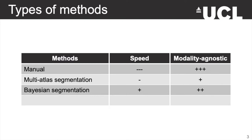The modern segmentation literature now focuses on supervised convolutional neural networks, which are extremely fast at test time since you can retrieve a segmentation in seconds. But the problem is that they generalize poorly to new modalities. So the question is: can we take those fast CNNs and make them modality-agnostic without having to retrain for new contrasts?